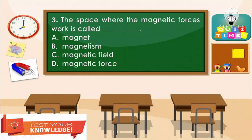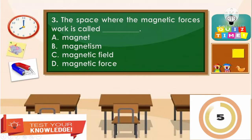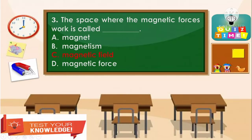Item number 3: The space where the magnetic forces work is called blank. A. Magnet, B. Magnetism, C. Magnetic field, D. Magnetic force. The correct answer is letter C — Magnetic field. Good job, kids!